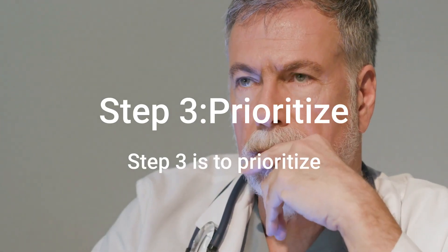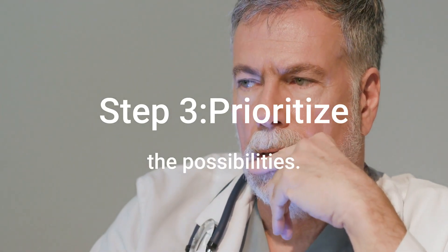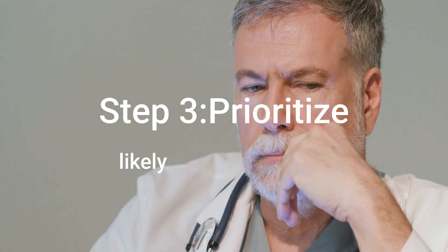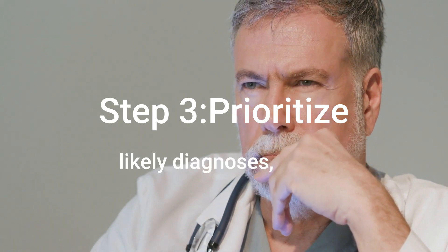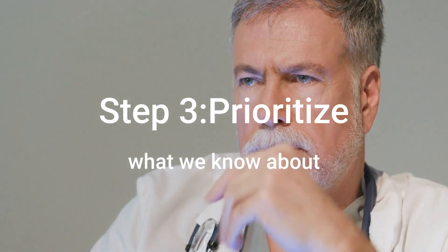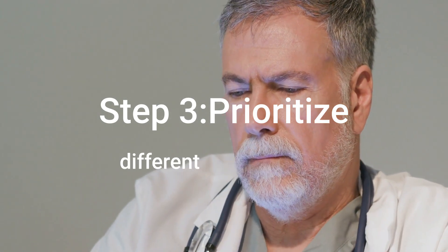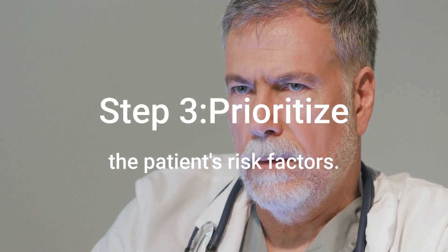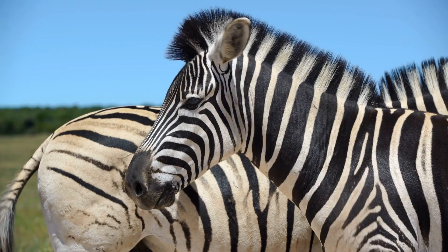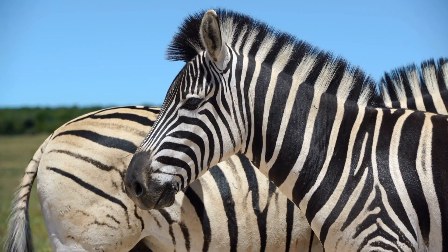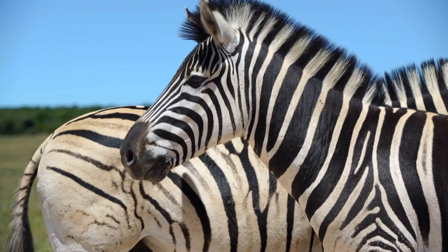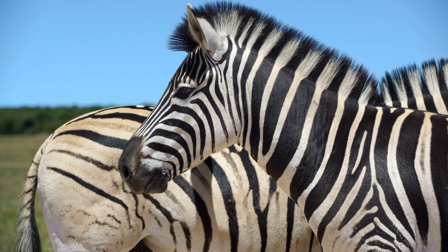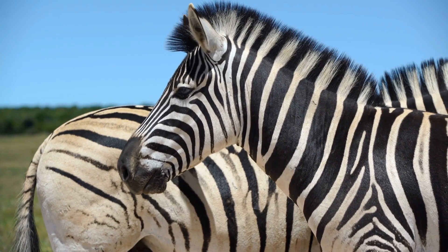Step three is to prioritize the possibilities. We start with the most likely diagnosis, given what we know about the prevalence of different diseases and the patient's risk factors. But we also keep in mind the potential zebra diagnosis — those rare conditions that can sometimes surprise us.